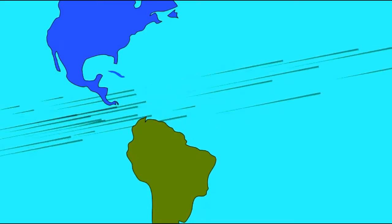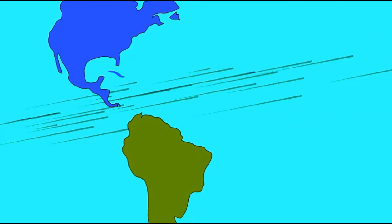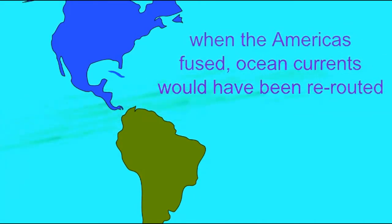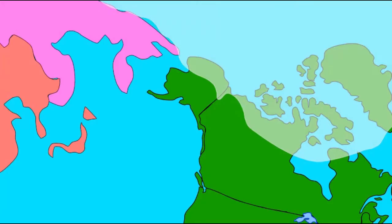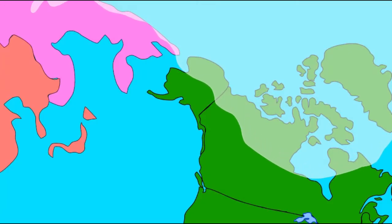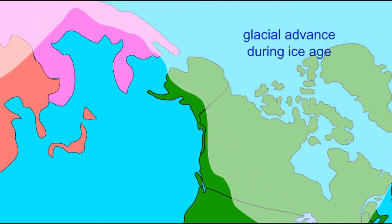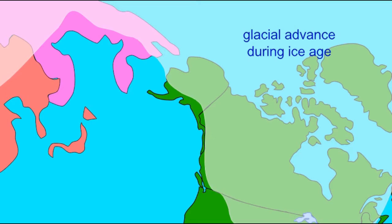In the last four million years, Panama has united the two Americas, which has prevented ocean currents from traveling from the Pacific into the Caribbean and then the Atlantic. This was probably the final trigger which initiated the ice ages, which began shortly after the Americas fused. A portion of Greater Panama fused to South America along its western coast.